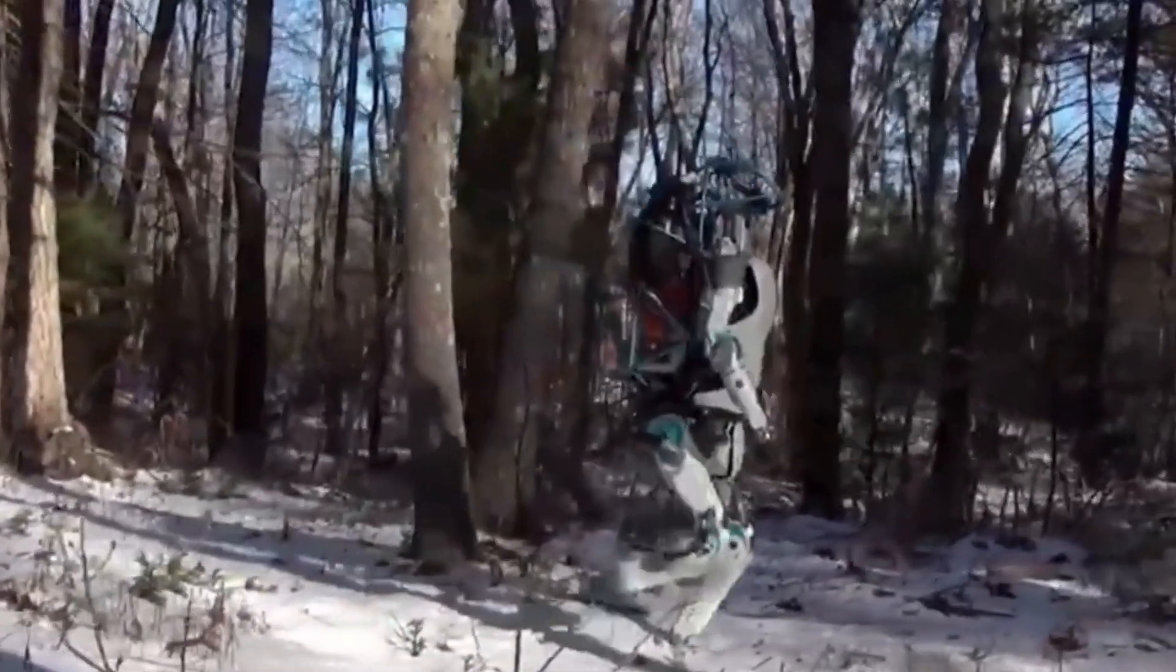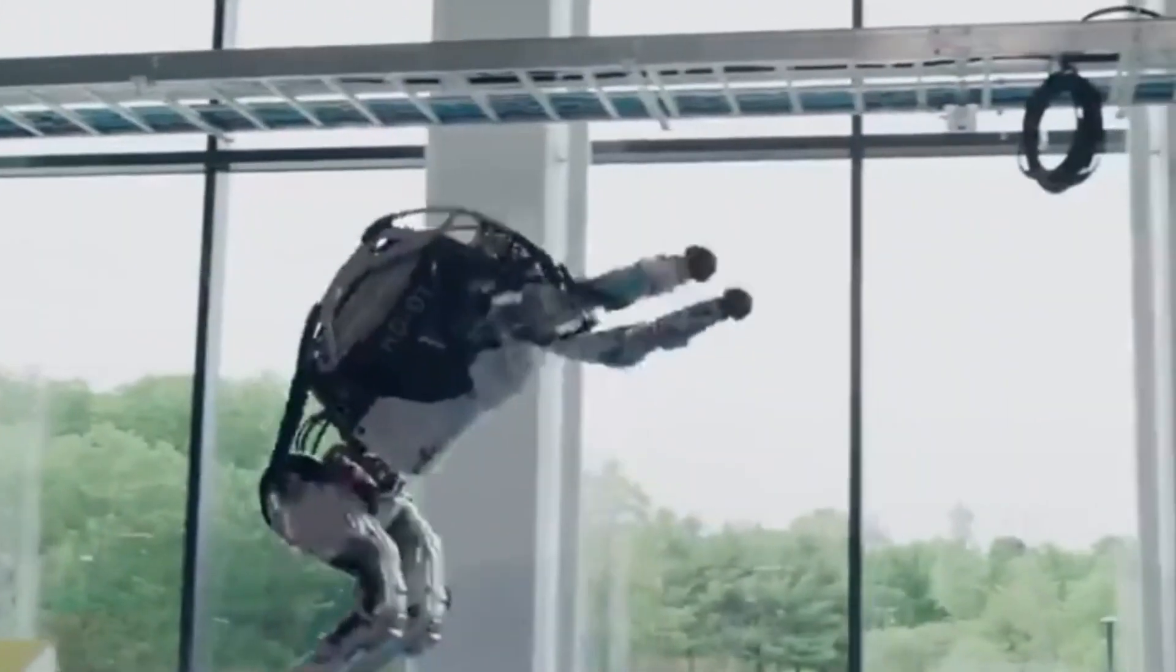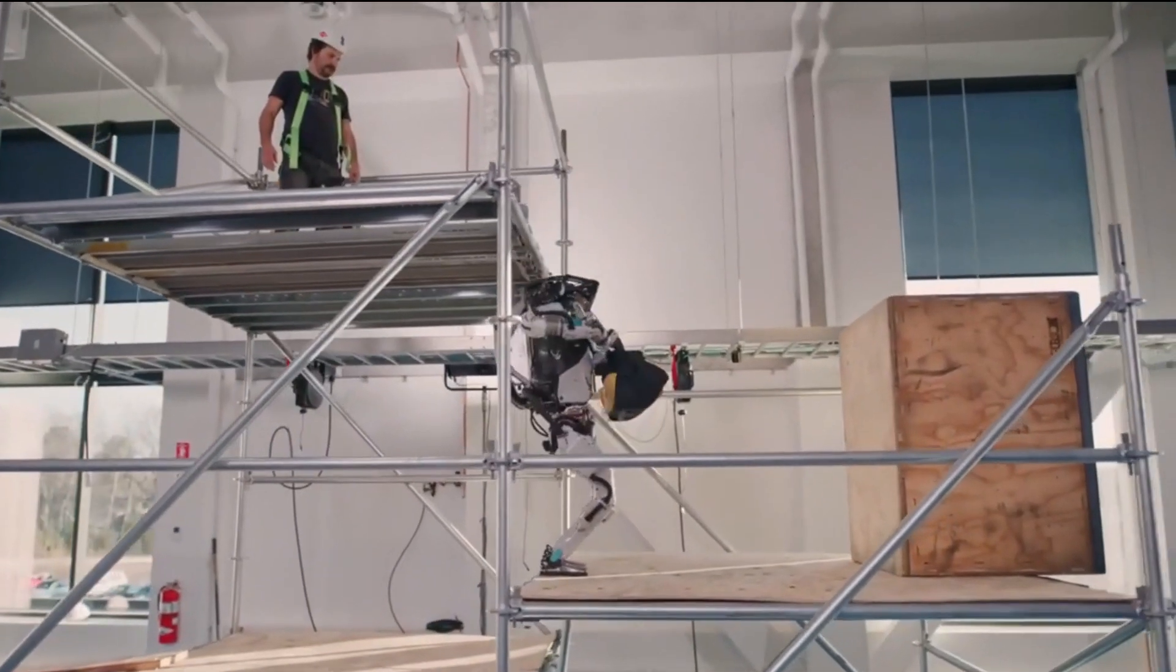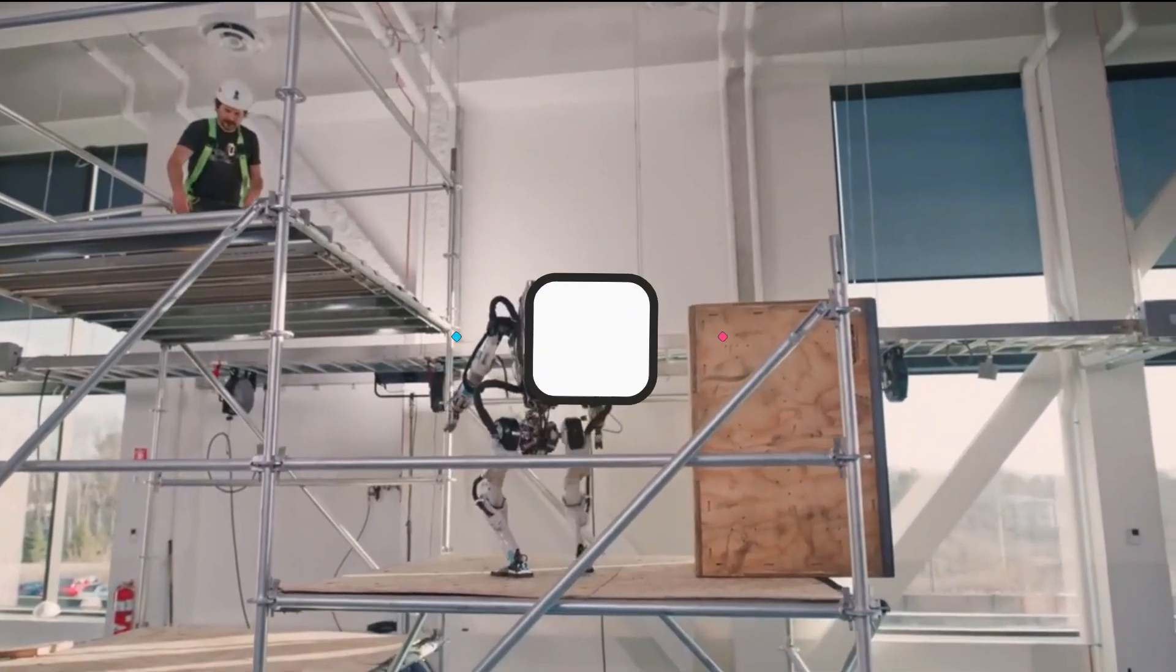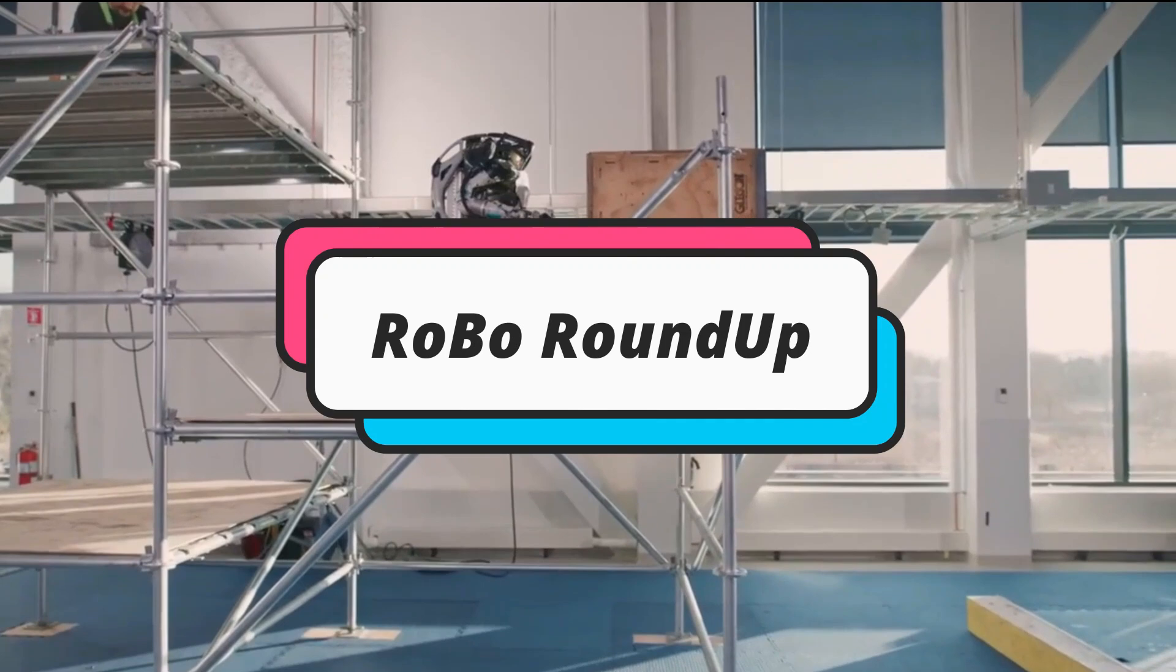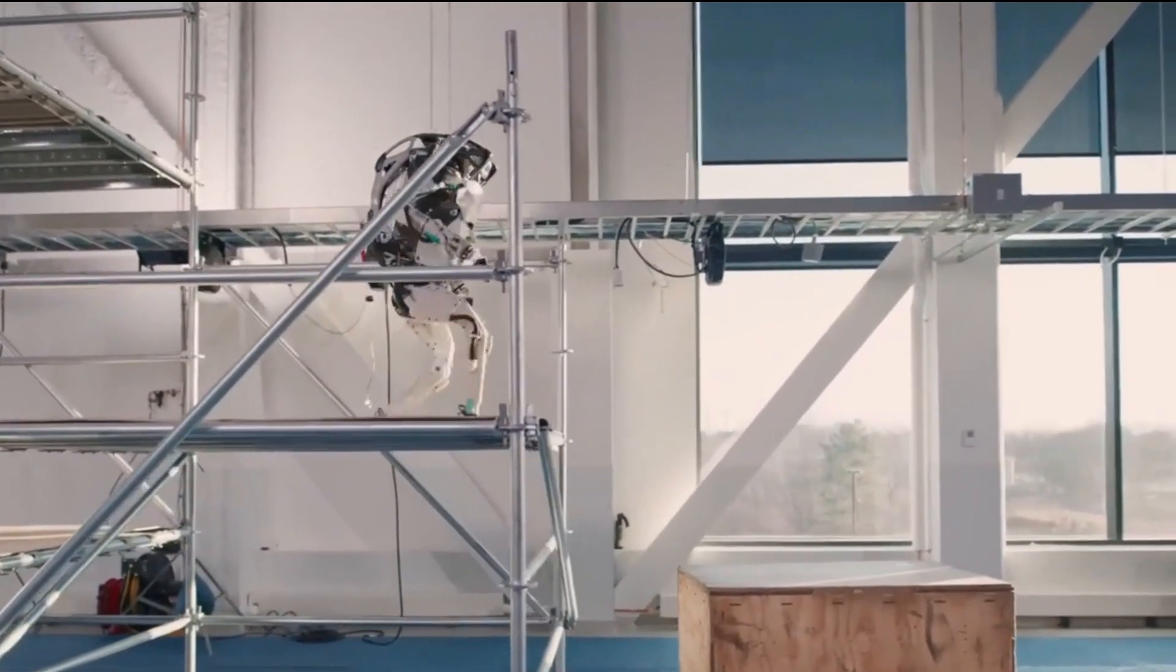The controller then continually plans the trajectory of both the Atlas robot and the object. By preplanning a trajectory for both the object and the robot, Atlas's controller can track its movement closely and aid the robot in maintaining its balance.